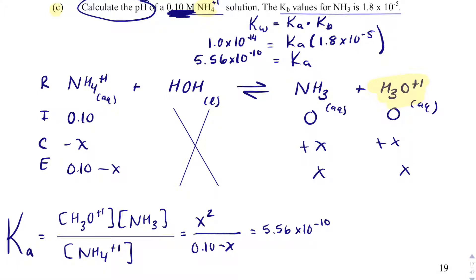And now I can do the 5% rule. I will get rid of minus X. Okay. And when I solve for X here, I end up getting 7.45 times 10 to the minus 6.